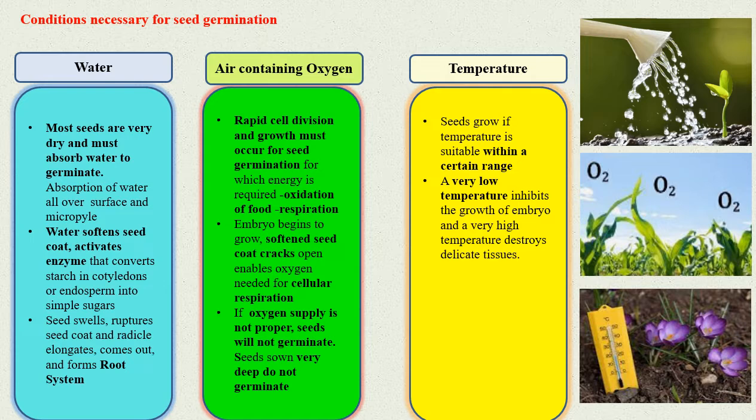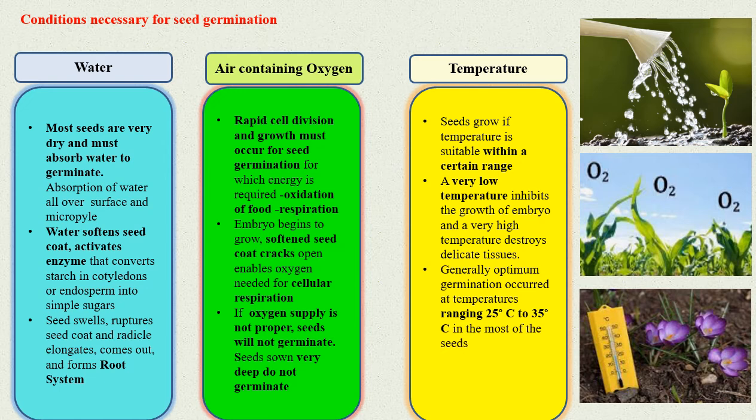And a very high temperature destroys the delicate tissues. Generally, optimum germination occurs at temperatures ranging between 25 degrees Celsius to 35 degrees Celsius in most of the seeds.